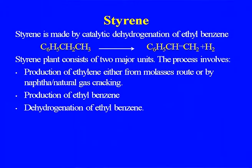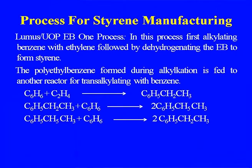Styrene is made by catalytic dehydrogenation of ethyl benzene. A styrene plant consists of two major units: production of ethylene (from molasses route or naphtha/natural gas cracking), production of ethyl benzene, and then dehydrogenation of ethyl benzene to styrene. In the Lummus UP-1 process, benzene is first alkylated with ethylene to form ethyl benzene, followed by dehydrogenation of ethyl benzene to styrene. Polyethyl benzene formed during alkylation is fed to a finishing reactor for transalkylation.